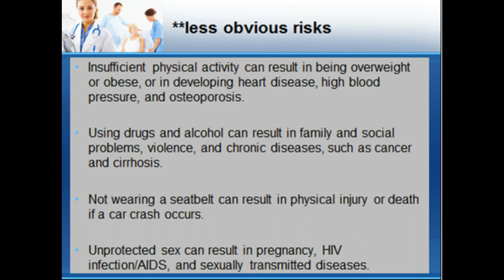Using drugs and alcohol can result in family and social problems, violence, and chronic diseases such as cancer and cirrhosis. Not wearing a seat belt can result in physical injury or death if a car crash occurs. Unprotected sex can result in pregnancy, HIV infection, AIDS, and sexually transmitted diseases.